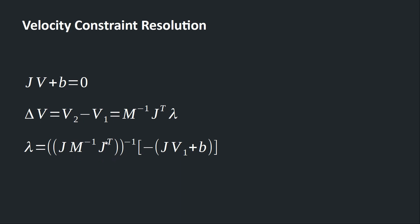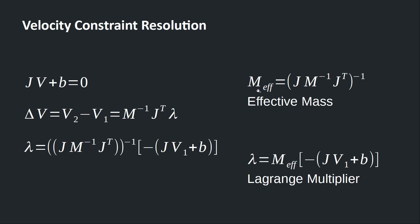The impulse lambda is equal to this entire equation. The left side is a product of three matrices with the inverse taken. The right side is the initial velocity that violates the constraint, plugged into the left side of the constraint equation and inverted. The left half of this expression is usually lumped into one term called the effective mass matrix, and lambda is the Lagrange multiplier.